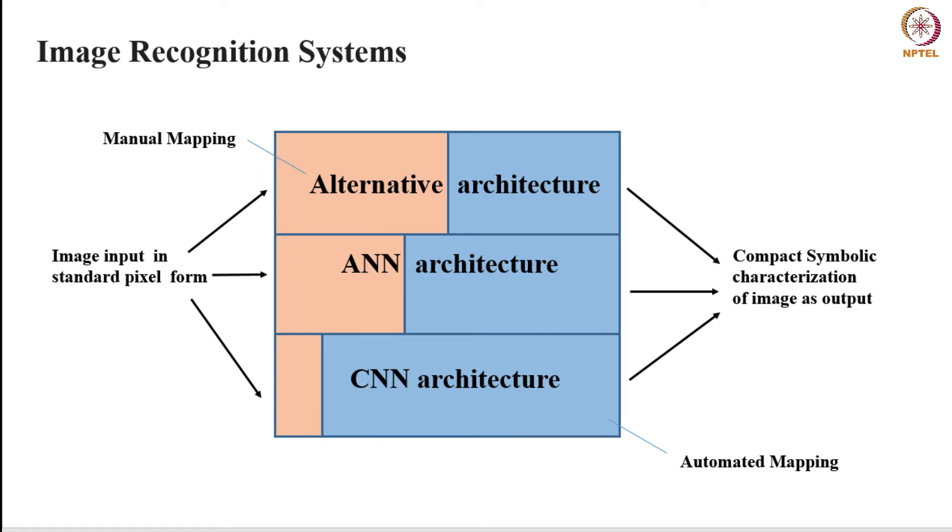The output for this kind of system is actually a compact symbolic characterization of the image, and that could be as simple as just a number referring to one of the specific class of objects that you want to find in the image. But it could be more complex, it could be a number of features, but normally it's a pretty compact symbolic description. And absolutely finite but not even finite, but of a small size.